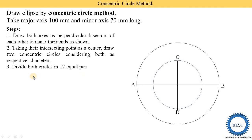The third step is to divide both circles into 12 equal parts. First, draw a vertical line — this already divides the circle into four parts. There are two methods to divide the circle into 12 equal parts: the first is by using a compass.